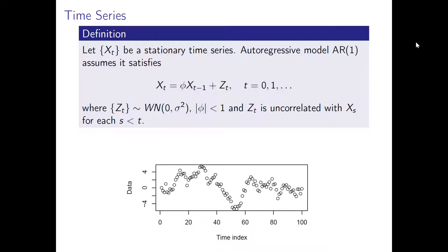The sequence εt is called white noise. The constant φ is called the autoregressive coefficient and it is between minus one and one. Also, the random variable εt is not correlated with xs for each s smaller than t. We simulated an AR1 process with the autoregressive coefficient fixed at 0.9, white noise variance one, and starting value zero. Since φ is quite close to one, the plot looks quite similar to a random walk, because when φ equals one the process becomes a random walk.